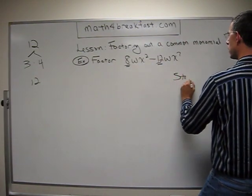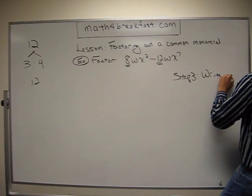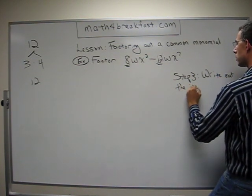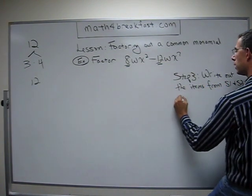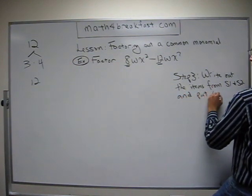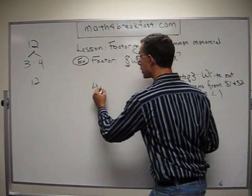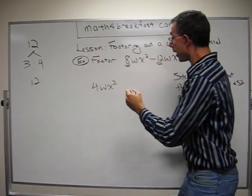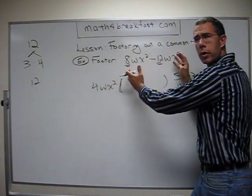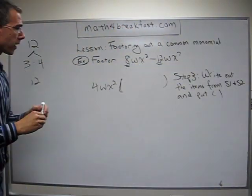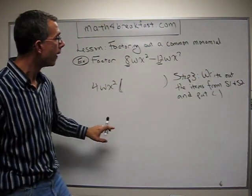Step 3: write out the items from step 1 and step 2, and put some parentheses. From step 1 we have a 4; from step 2 we have a W and an X squared. So we write 4WX squared, and now I throw in some parentheses — I made the parentheses about as wide as the original problem, because we are factoring and things will get more condensed.